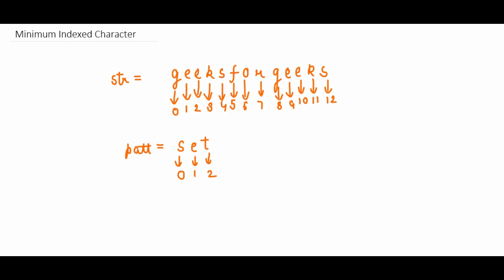Hello everyone, today we are going to solve this question: Minimum Index Character. We have two strings, str and pad string. We have to find the character of pad string which is present at the minimum index in str string. As you can see, s is present in str string at the fourth index, and e is also present at the first index.